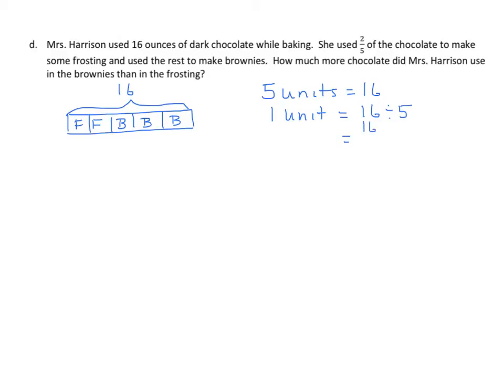And that's the same as 16 fifths, which is 3 and 1 fifth. Now, we could do some calculation here. I could find my 3 units, right? 3 units equals 3 times 3 and 1 fifth. And that equals 9 and 3 fifths.